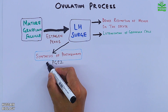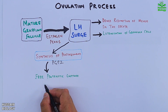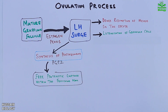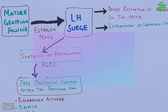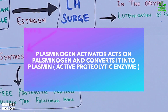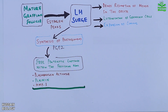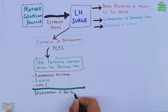PGE2 in turn frees proteolytic enzymes within the follicular wall. First, we get the activation of plasminogen activator, which then acts on plasminogen and converts it into the active proteolytic enzyme plasmin. We also have MMP1 here. All these proteolytic enzymes drive the degeneration of the peri-follicular matrix.